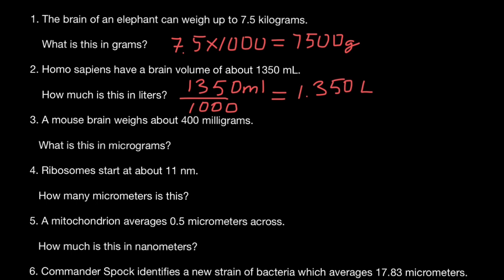By the way, if you think that the human brain is the largest among all animals, as you can see, the brain of the elephant is much larger. There are many animals whose brains are much larger than the human brain. Here we have liters, here we have grams, but we understand that this number means a much larger brain than this number here.